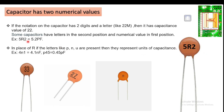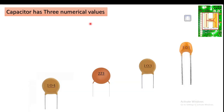For example, 5R2 indicates 5.2 picofarad. In place of R, letters like P, M, or U are used to represent units. For example, 4N1 means 4.1 nanofarad; 4P1 means 4.1 picofarad; and P45 means 0.45 picofarad. So P, N, and U represent pico, nano, and micro respectively. These are the two-numerical-value capacitors.